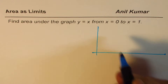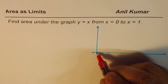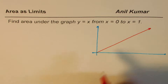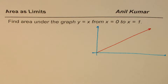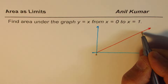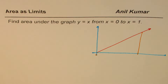Let's say this is the x and y coordinate system. We'll sketch the line y equals x. We need to find the area under the graph of y equals x from x equals 0 to x equals 1. So that's the area which we are interested in finding.